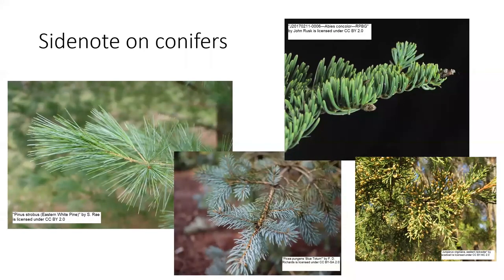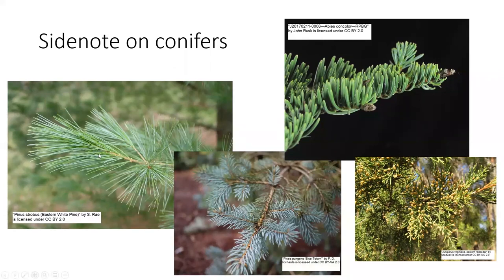There are a few simple ways to distinguish between the major groups of conifers or cone-bearing trees. Pines have needles that are born in little clusters called fascicles. Pines will have needles born in fascicles of two, three, or five — counting the needles can help identify the species. Eastern white pine is the only one that grows around here with needles born in fascicles of five, so that's a pretty easy one to identify.